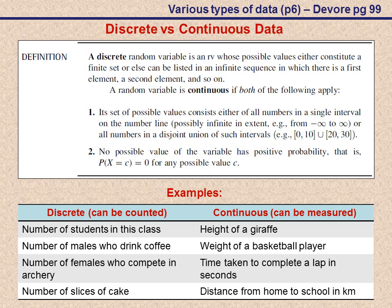The second part of the definition says that no possible value of the variable has a positive probability. In other words, the probability of getting a specific value in an interval is zero.